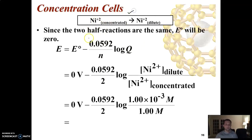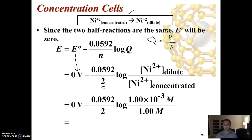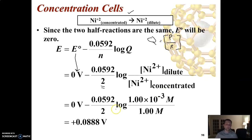Now let's calculate the voltage of the nickel concentration cell using the Nernst equation. Both half reactions are the same, so E°_cell = 0. Using E_cell = E°_cell − (0.0592/n) log Q, with n = 2, and Q = [Ni²⁺ dilute] / [Ni²⁺ concentrated] = 0.001 / 1. Plugging into the calculator gives a positive 0.0888 volts, confirming that electrons will flow and you do get some voltage from this concentration cell.